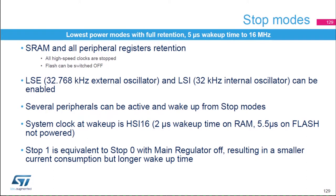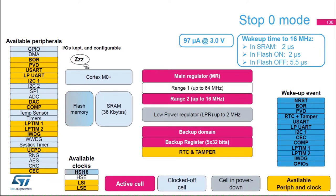The STM32G0 devices feature two stop modes — stop zero and stop one — which are the lowest power modes with full retention and only 2 microseconds wake-up time to run mode at 16 MHz. The contents of SRAM and peripheral registers are preserved in stop modes. All high-speed clocks are stopped, but the 32 kHz external and internal oscillators can be enabled, and several peripherals can remain active and wake up from stop mode. The voltage regulator is configured as main regulator mode in stop zero mode, with the RTC clocked by the internal or external low-speed oscillator remaining active.